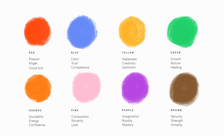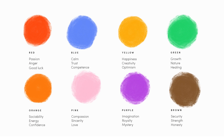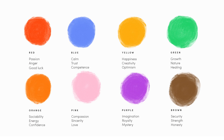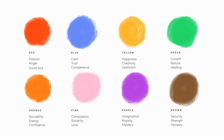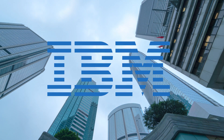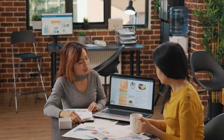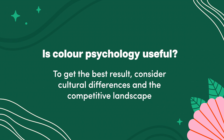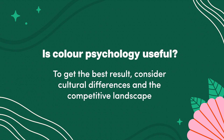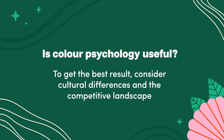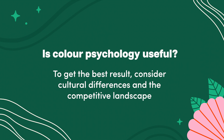In color psychology, different colors are often seen as evoking certain feelings in most people. For example, blue is often seen as trustworthy and calm, while orange stands for innovation and energy. This is why we often see large corporate companies use blue and marketing companies use orange. While it can be helpful to think about the psychology behind colors, there are so many other factors like culture and the competitive landscape that can affect which colors are the right choice.